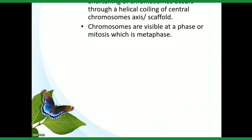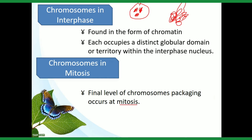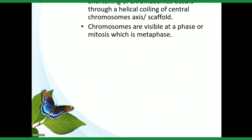These two points regarding shortening of chromosomes are part of mitosis. Shortening of chromosomes occurs through a helical coiling around a central chromosome axis scaffold. In the center there is a scaffold protein, and the chromosome is coiled around this scaffold protein. This coiling is what causes the chromosome size to shorten. The phase at which chromosomes are maximally visible is metaphase.